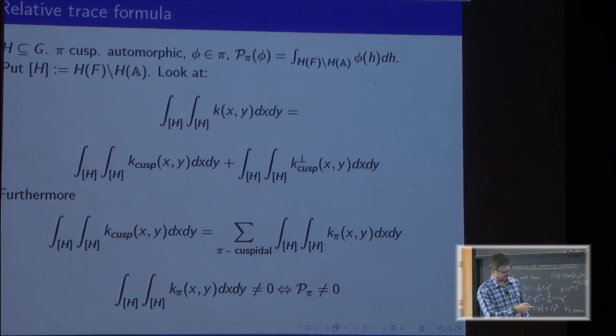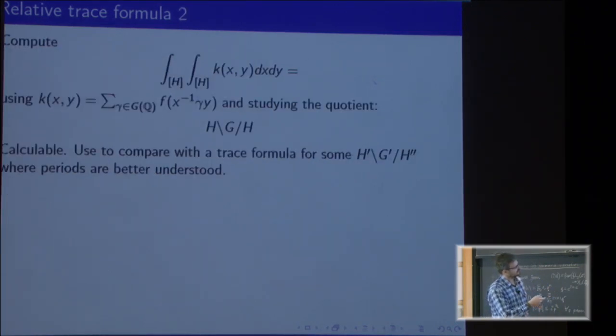The title is relative trace formula. What is the formula? The point is that K, apart from this spectral decomposition into cuspidal part and orthogonal part, has another formula: it's just the sum over rational points. There's another way of computing this integral, and this is by studying the quotient.